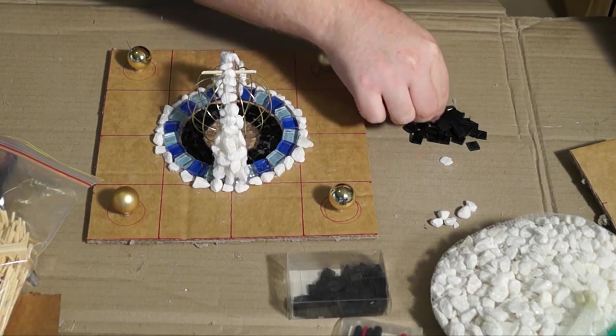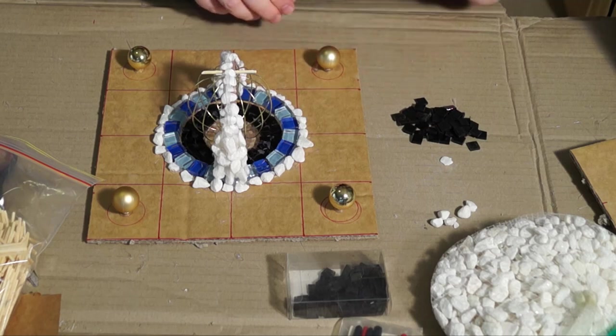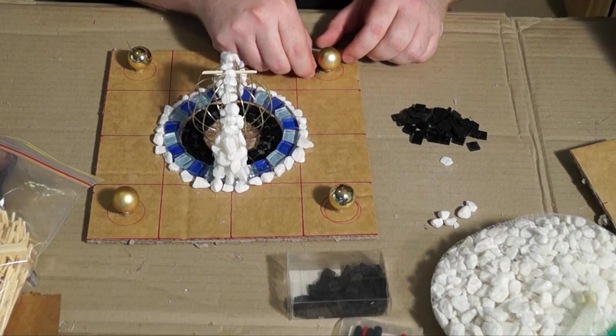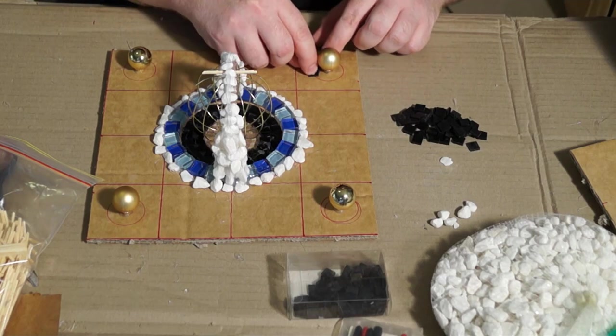Now around those, I'm just going to place some hot glue and put down more of the black glass squares. Again, if you can't find that sort of thing, you can just use cardboard.